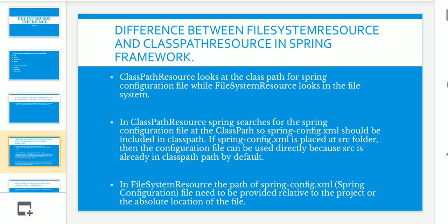The next question was: difference between FileSystemResource and ClassPathResource in Spring Framework. ClassPathResource looks at the class path from the Spring configuration file, while FileSystemResource looks in the file system. In ClassPathResource, Spring searches for spring-config.xml in the class path — if placed at the src folder, it works directly since src is in the class path by default. In FileSystemResource, the path of spring-config.xml needs to be provided relative to the project or as an absolute location.